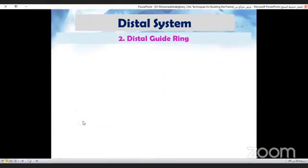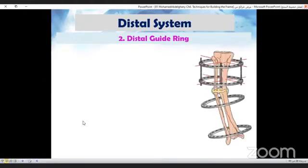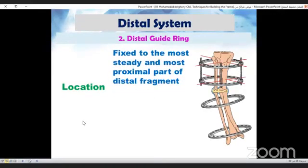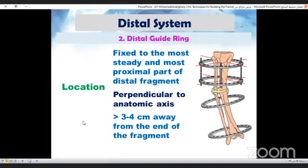Now we come to the second ring of the distal block, which is the distal guide ring. This has to be fixed to the most steady and most proximal part of the distal segment, perpendicular to the anatomical axis. And like its proximal counterpart, it is fixed three to four centimeters away from the end of the fragment.